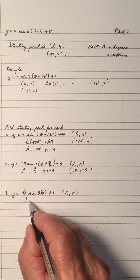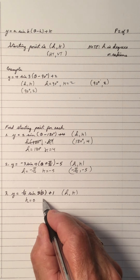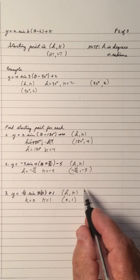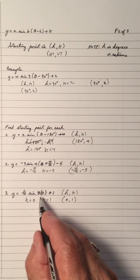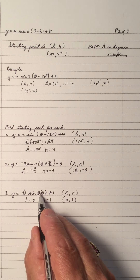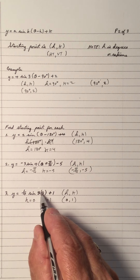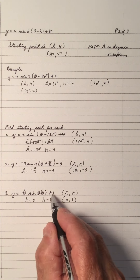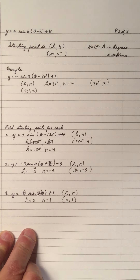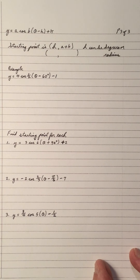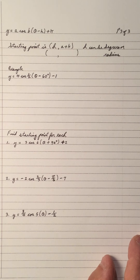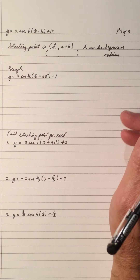For the next sine example, notice there's no plus in the bracket, so H is 0 and K is 1. So the starting point is 0 comma 1. Take the 0 — this could be degrees or radians, it won't make a difference since it's 0. Put 0 in: 3 times 0 is 0, sine of 0 is 0, 1 quarter times 0 is 0, 0 plus 1 gives you 1. So that's the starting point. For sine, the starting point is H comma K, or you can plug in the horizontal phase shift and work out the equation.